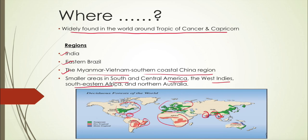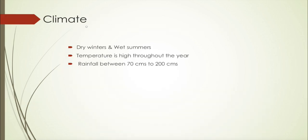They are also found in southeastern Africa and in some parts of northern Australia. These are basically the places where we find tropical deciduous forests.